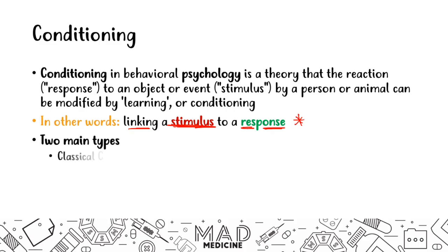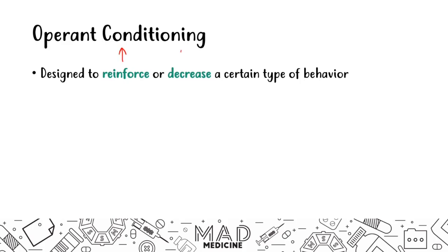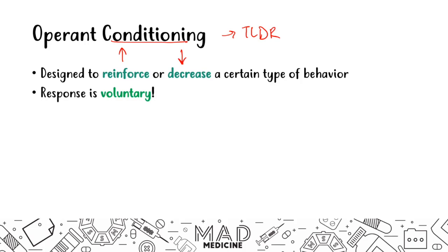There are two main types: classical conditioning and operant conditioning. In this video, we're talking about operant conditioning specifically. Operant conditioning is designed to increase or decrease a certain type of behavior through the process of linking a stimulus to a response. One important thing to remember is that the response is going to be voluntary — in classical conditioning the response was involuntary, but in operant conditioning you know what you are doing and what's happening.